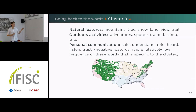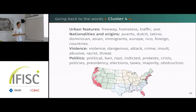Cluster three is interestingly non-contiguous — unlike many previous studies — located in very rural areas or around mountain ranges, where people speak a lot more about natural features and outdoor sports. Cluster four is centered around big metropolitan areas on the coasts — the richest and most politically integrated areas — where they mention urban features but more interestingly talk a lot about politics and international issues.